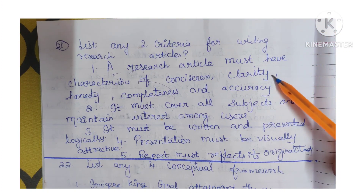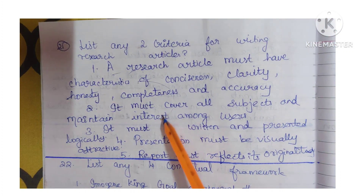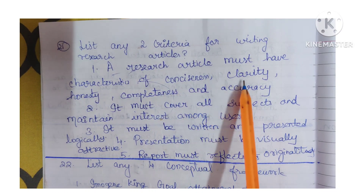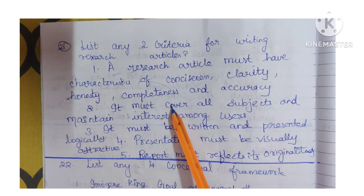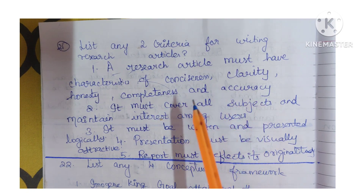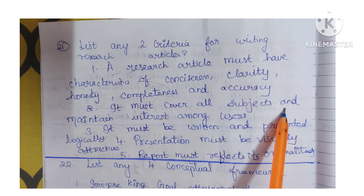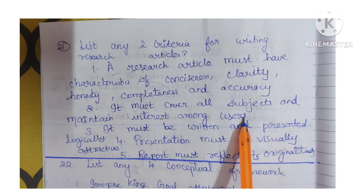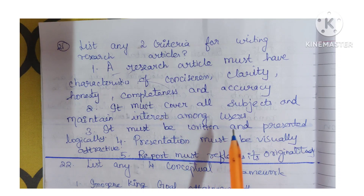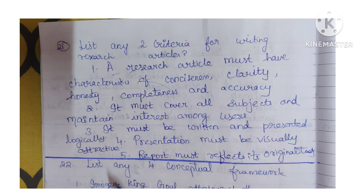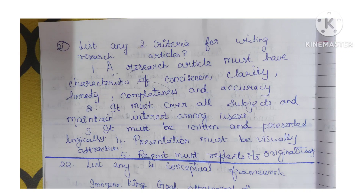Question 21: List any two criteria for writing research articles. A research article must have the characteristics of conciseness, clarity, honesty, completeness, and accuracy. It must cover all subjects and maintain interest among readers. It must be written and presented logically, and the presentation must be visually attractive. The research article or report must reflect its originality.